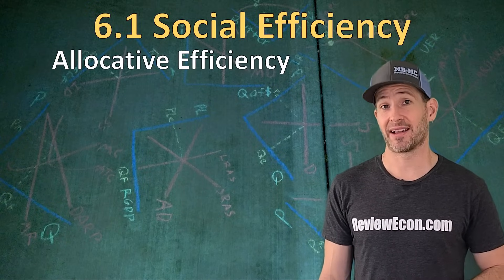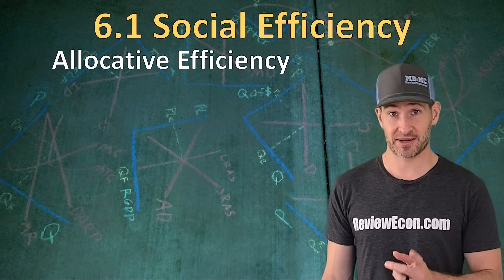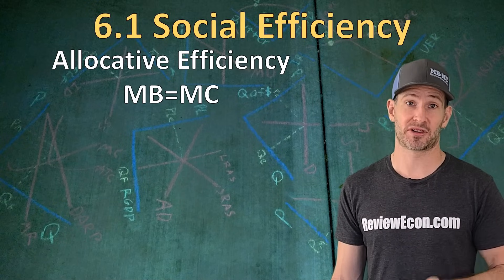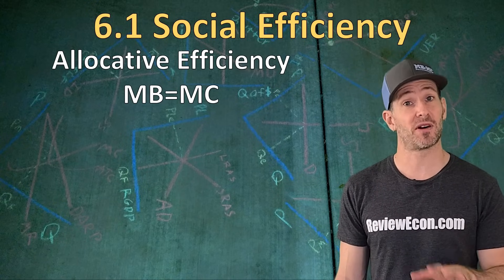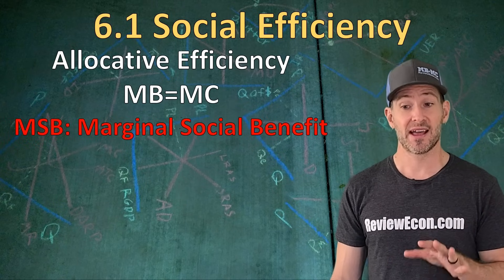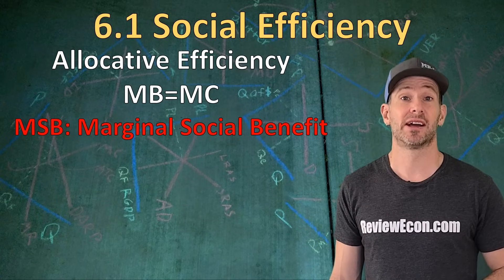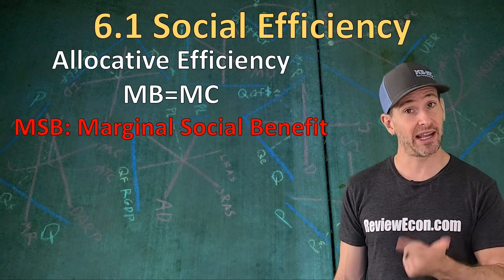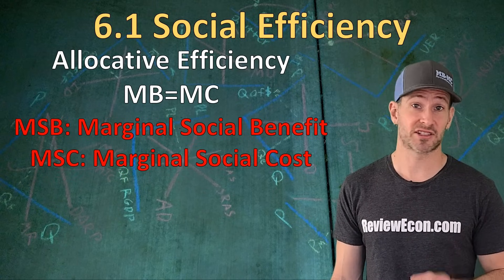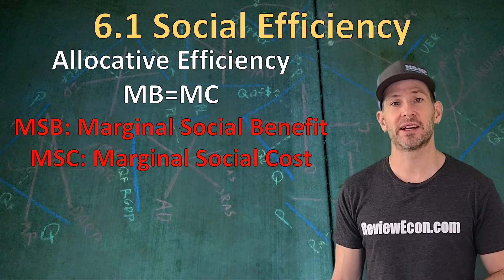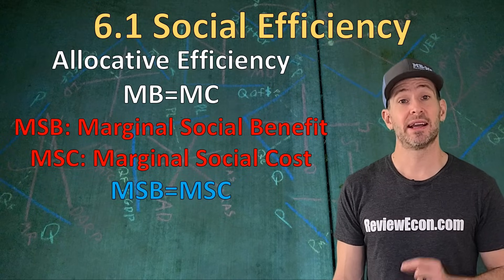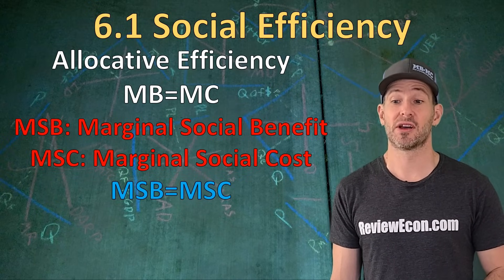First, I'm going to talk about Allocative Efficiency. You already learned about Allocative Efficiency in previous units. Allocative Efficiency means that we are producing where the marginal benefit equals the marginal cost. In this unit, we're going to look at the marginal social benefit — that's the benefit of a product to the entire economy, not just for the people buying it, but for anybody else that benefits may fall upon. We're also going to look at the marginal social cost — that's the marginal cost not just for the people producing the product, but for anybody else in society that may face cost as a result of this product. The true Allocatively Efficient outcome is where the marginal social benefit equals the marginal social cost.